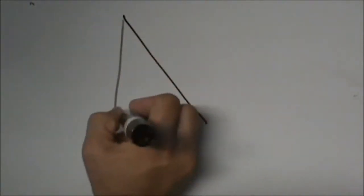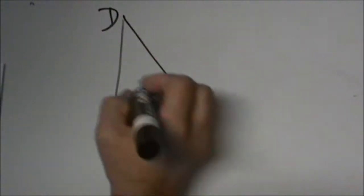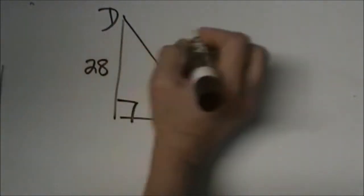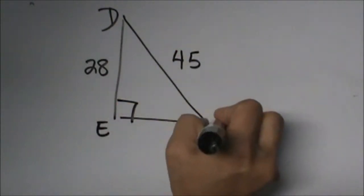We have practice one. Find angle measure D. So let's look at our triangle. We have a D up here, a 28 here, and a 45 here. I'm just going to go ahead and label E and F for you.